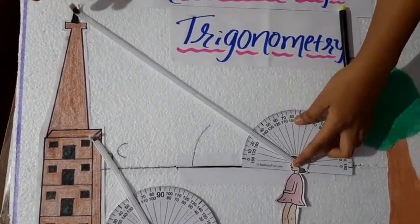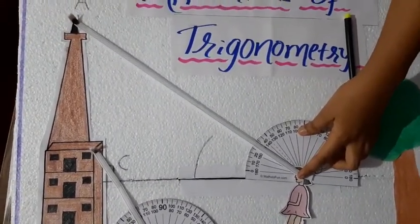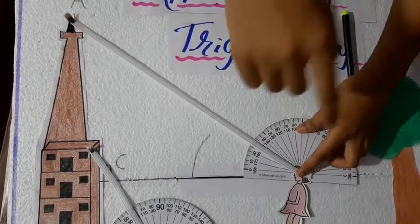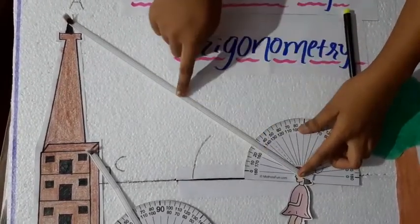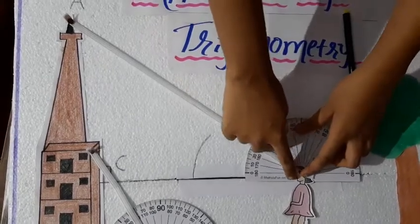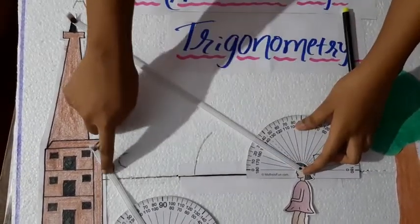Then, how is it possible? Because observe another thing here. When the angle of elevation is decreased, the distance is increased.